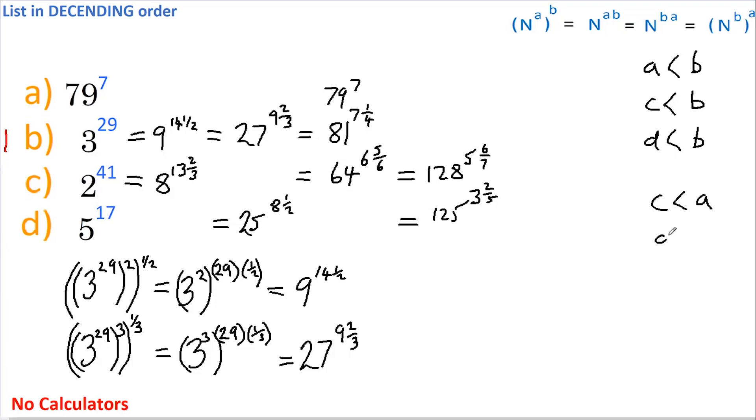From this we conclude that a is second largest, c is third largest, and d is the smallest. And that's our answer.